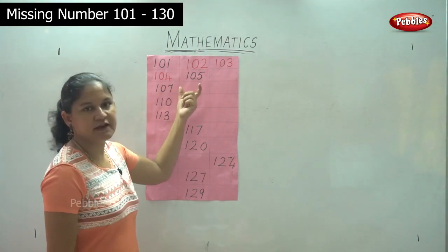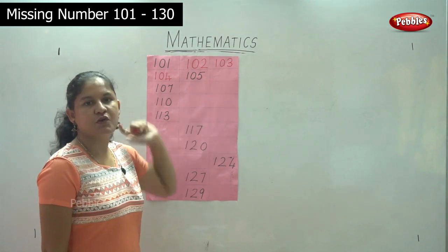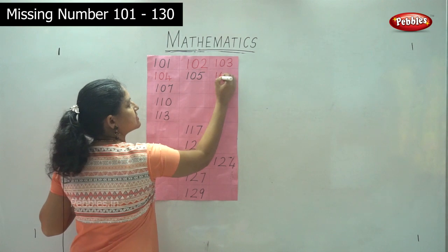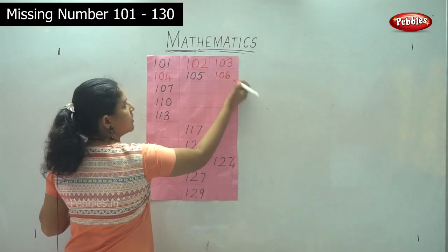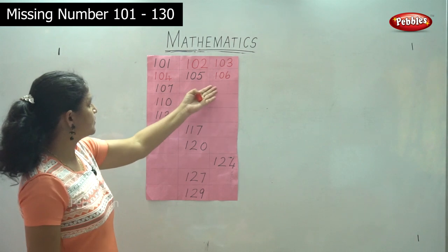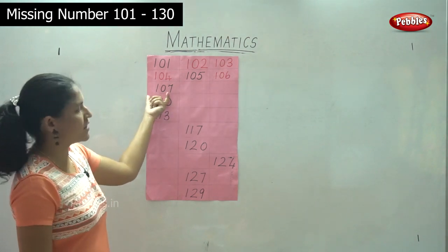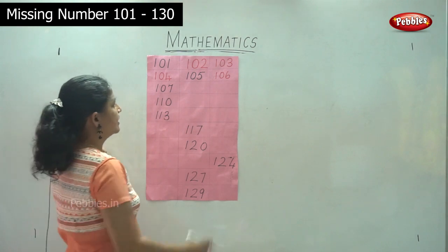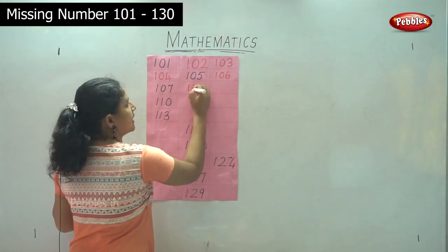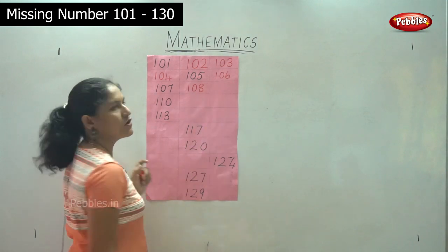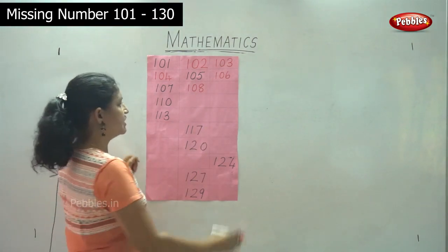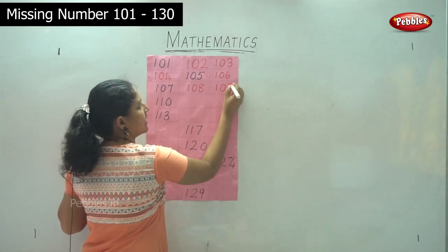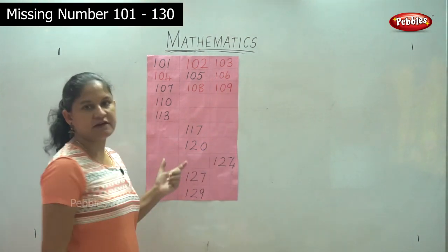Then we have 105 and we don't know what is the next number. The next number is 106. After 106 we have the number 107. After 107 it is 108. The next blank will be 109.